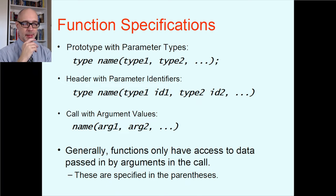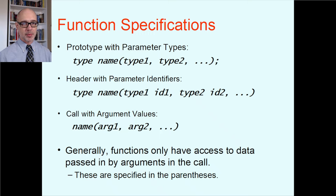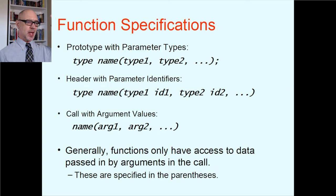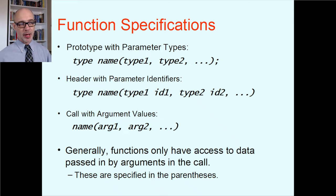You can get away without function prototypes if you define every function before you use it. But for larger programs it becomes challenging to get them in the right order — function A calls function D, but function D calls functions C, H, and J. It would be a great struggle to order them so you never call something before it's defined. Prototypes solve that problem: they say 'here are all the functions you're going to see.' So generally you'll have prototypes, function definitions, and then function calls.